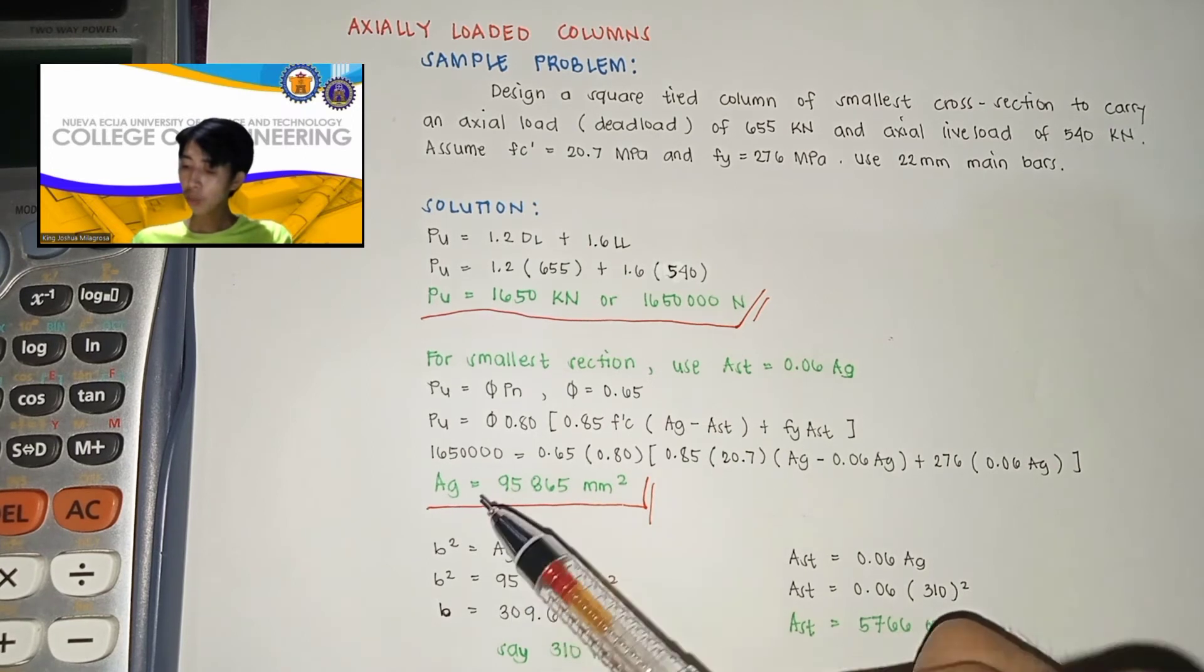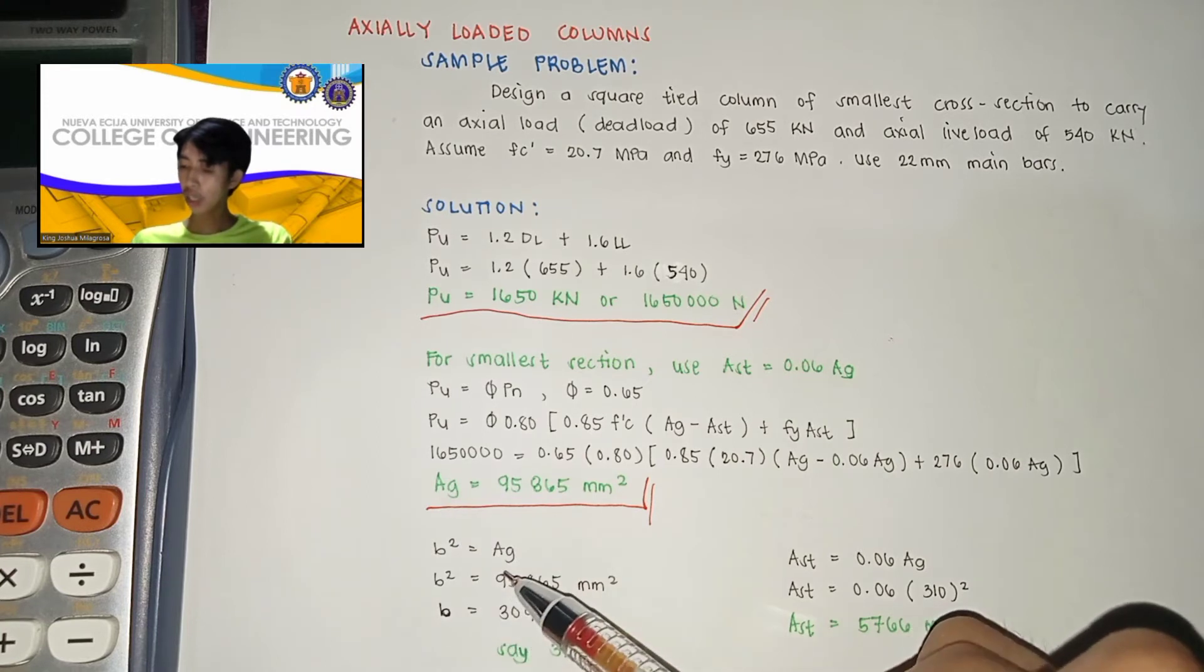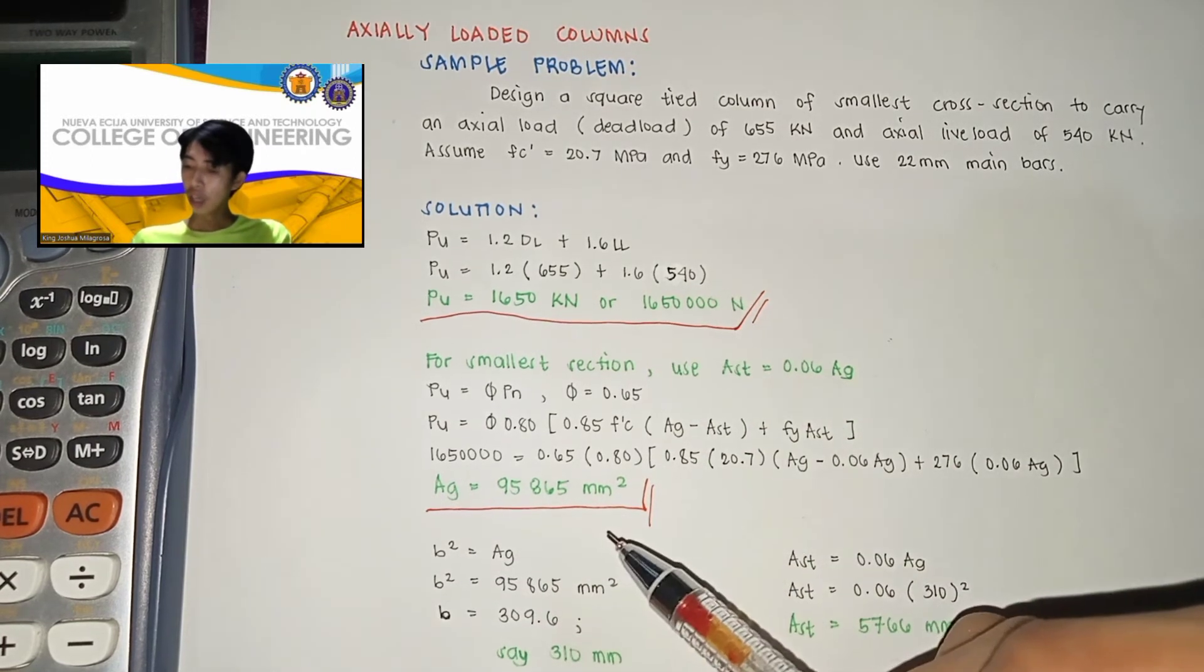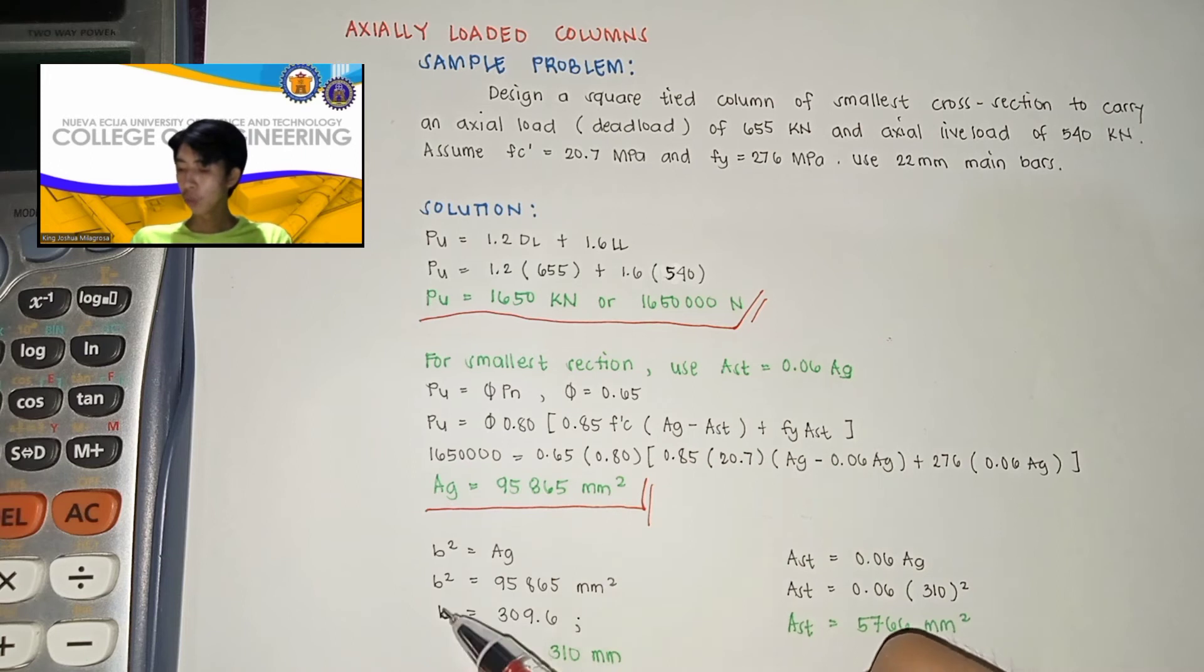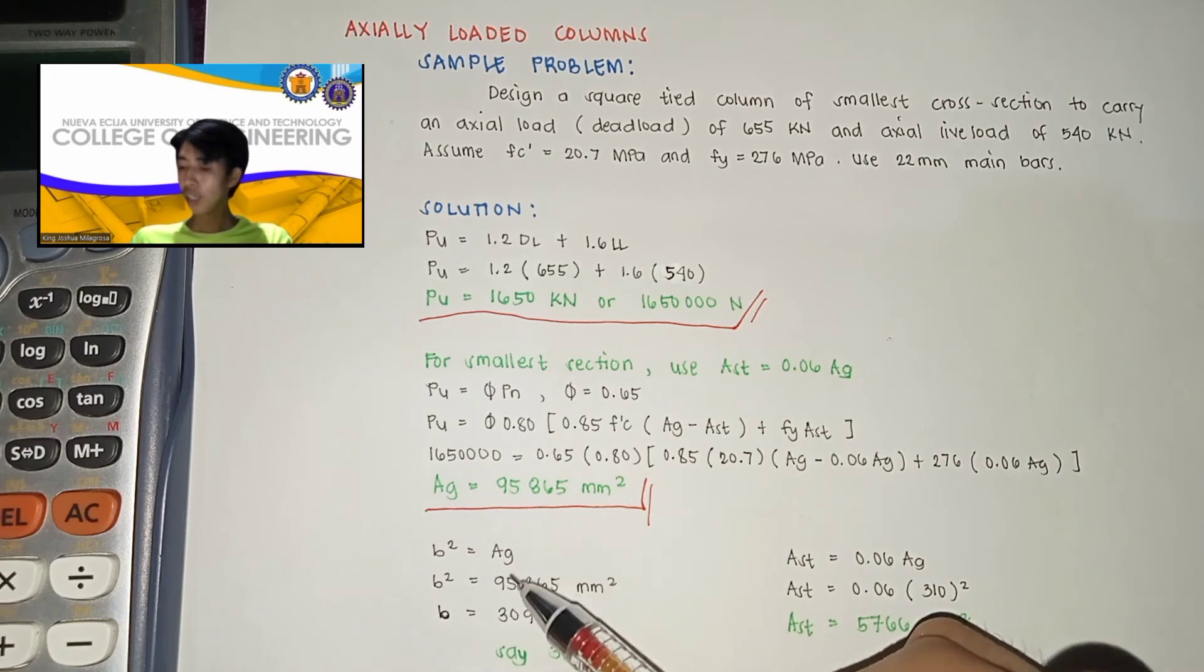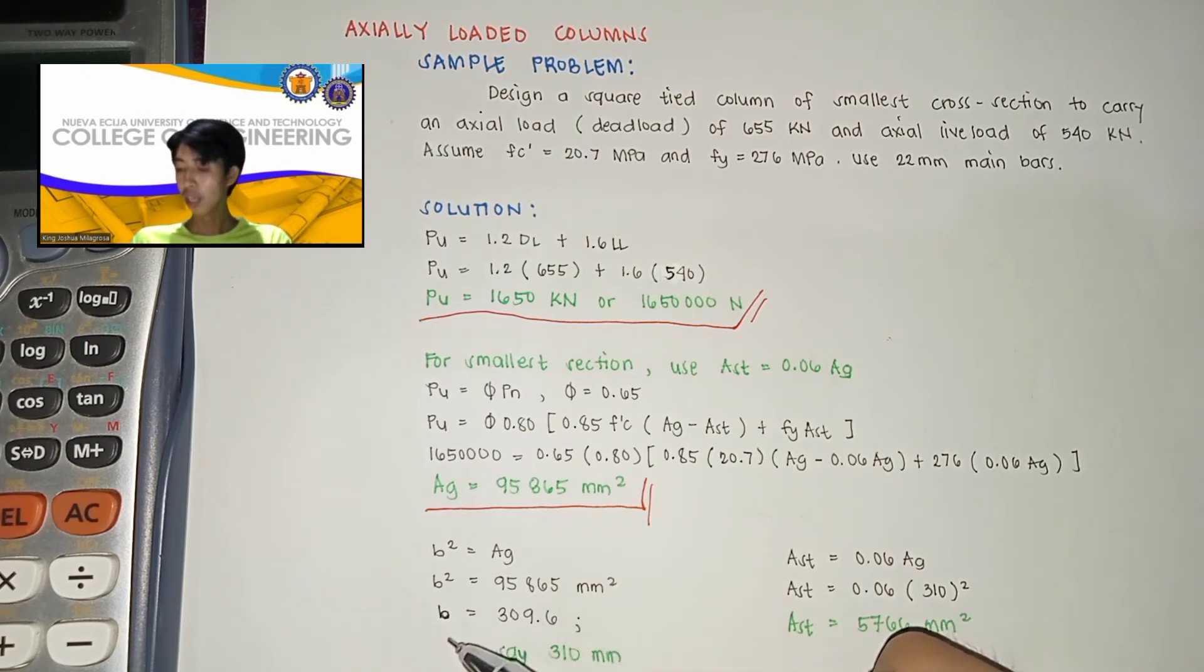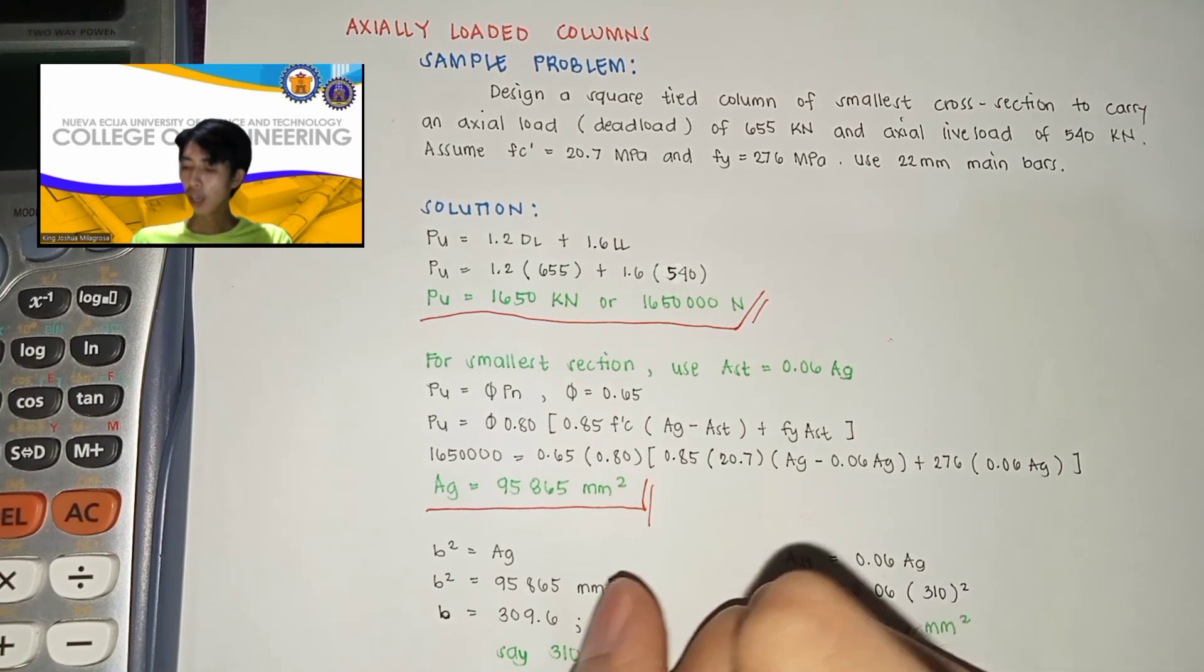So since meron na tayong gross area, alam natin na yung gross area is equal to B squared. Since yung column or yung column natin is equal lang yung side. So B squared is equal yan sa AG which is 95,865 mm squared. So square root ng both side is B is equal to 309.6, or say yung side ng column is equal to 310 mm.